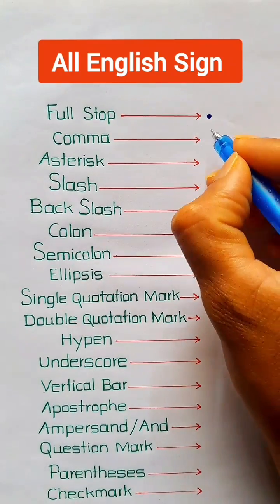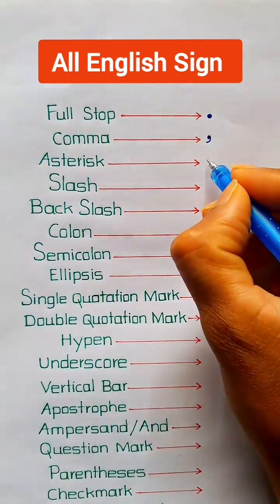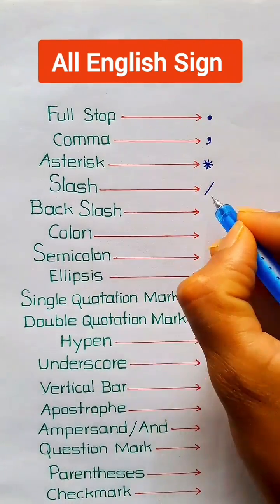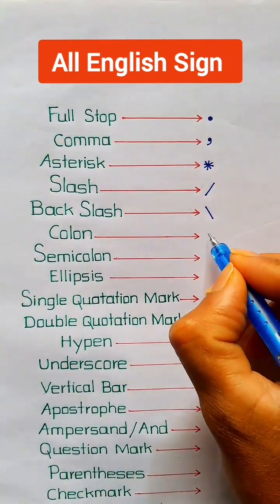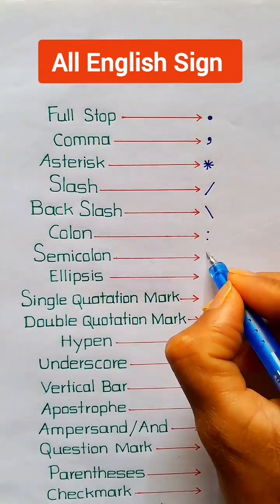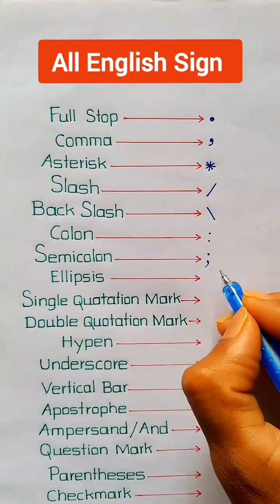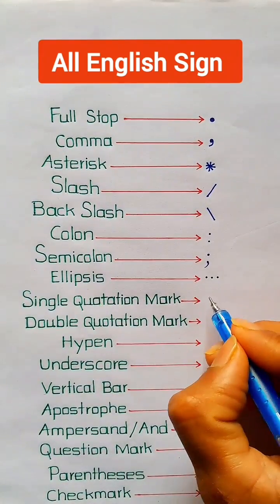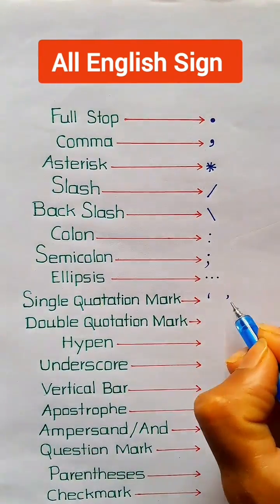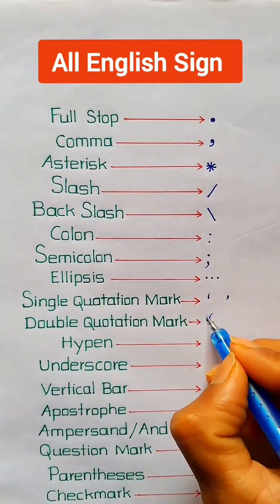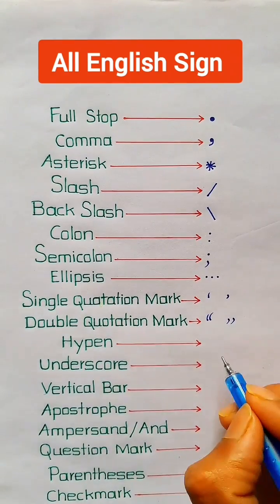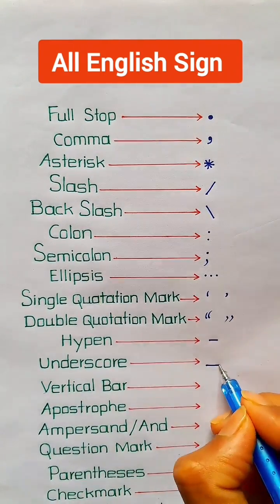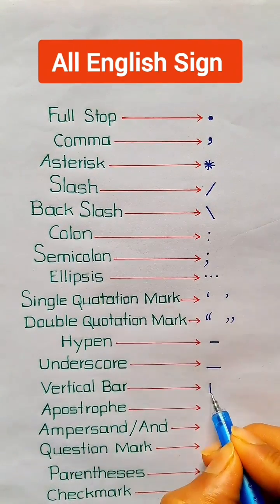Full list of comma, asterisk, slash, backslash, colon, semicolon, ellipsis, single quotation mark, double quotation mark, hyphen, underscore, vertical bar.